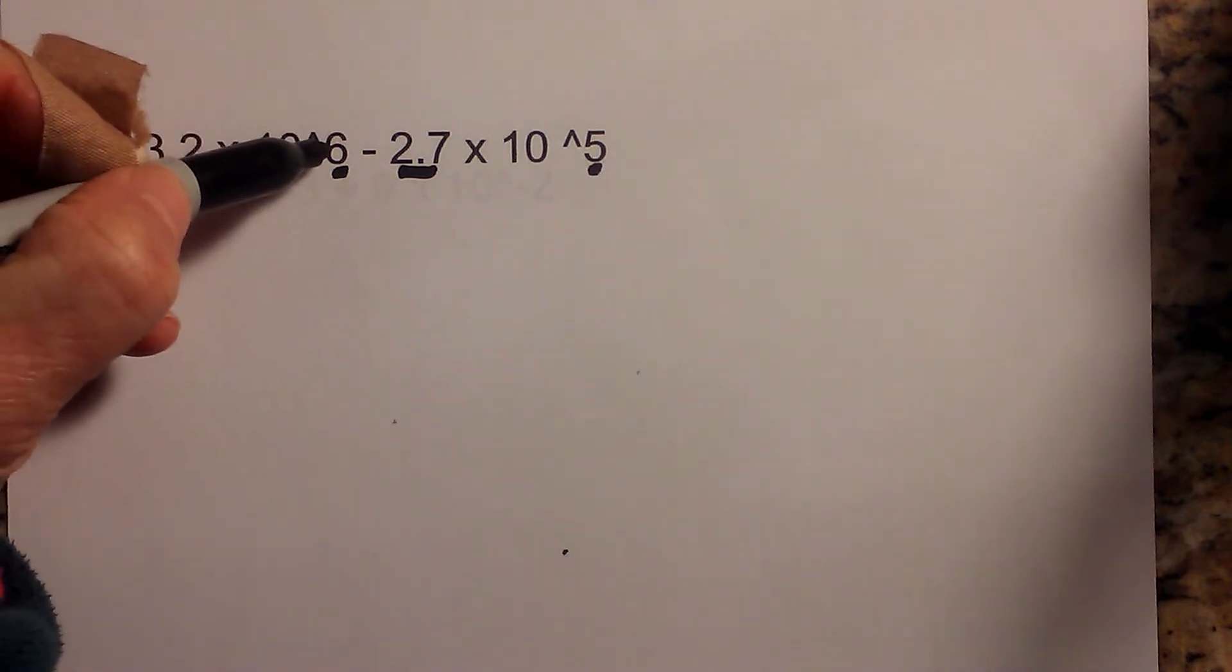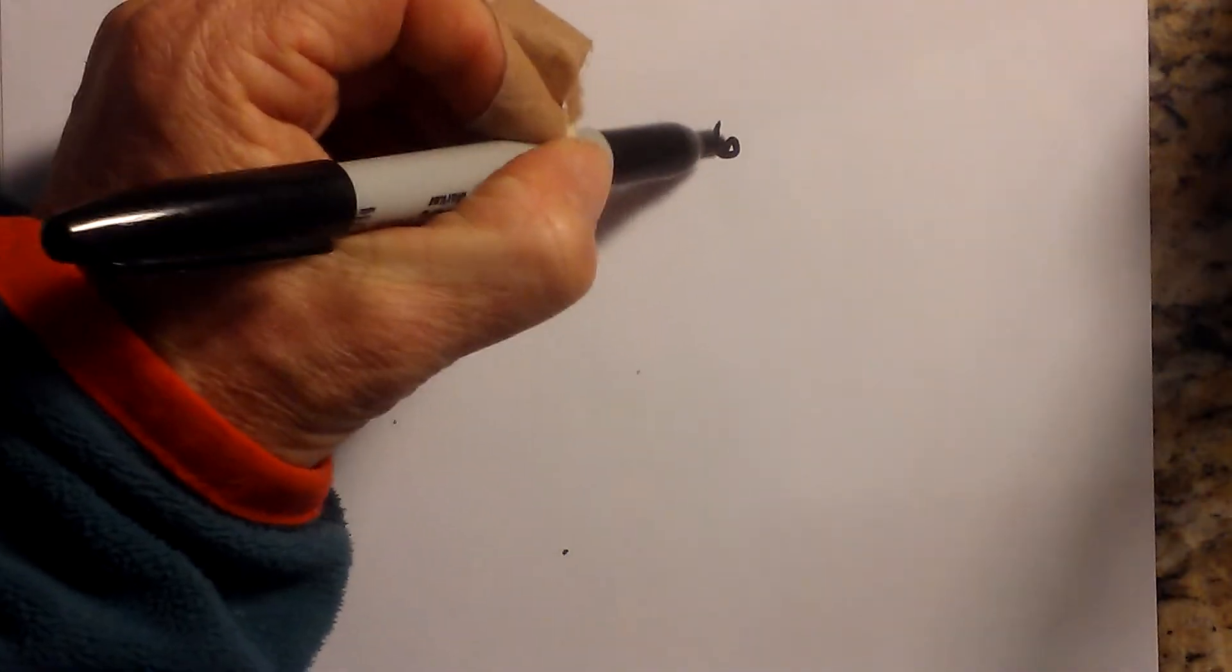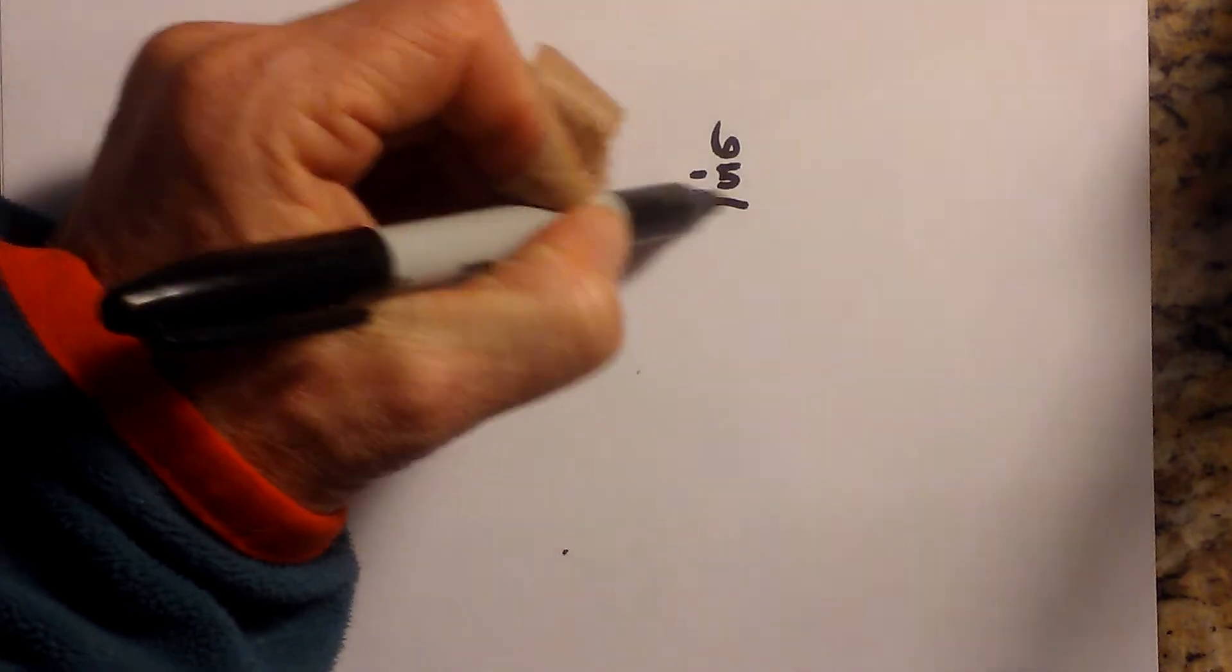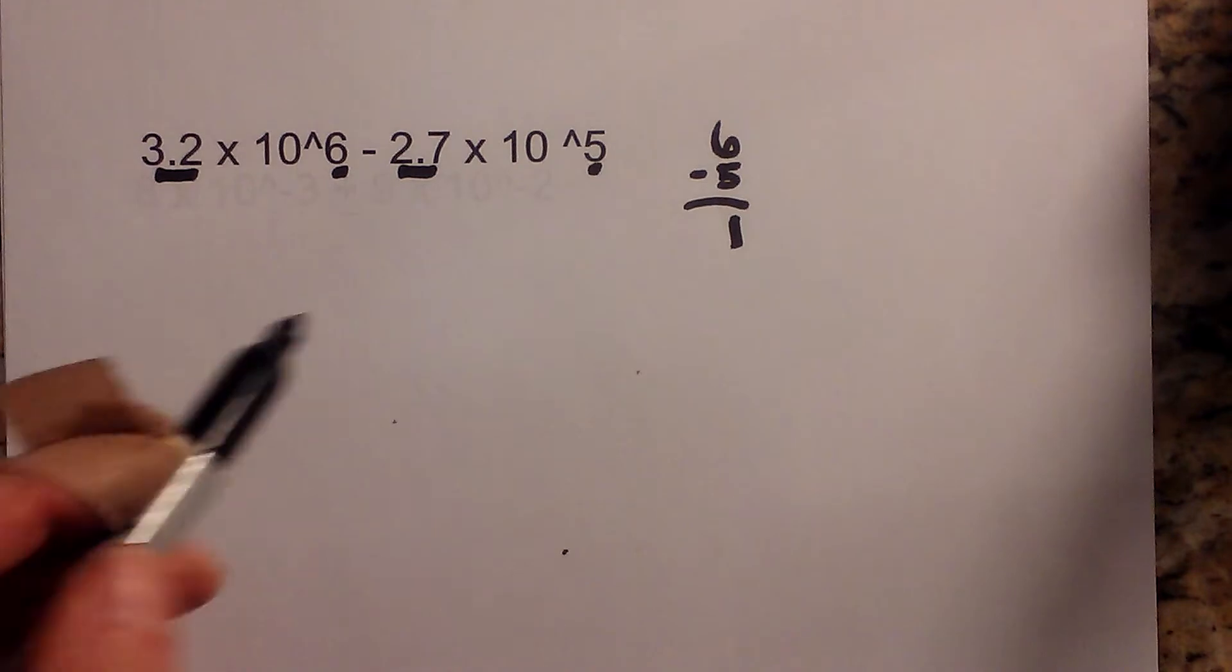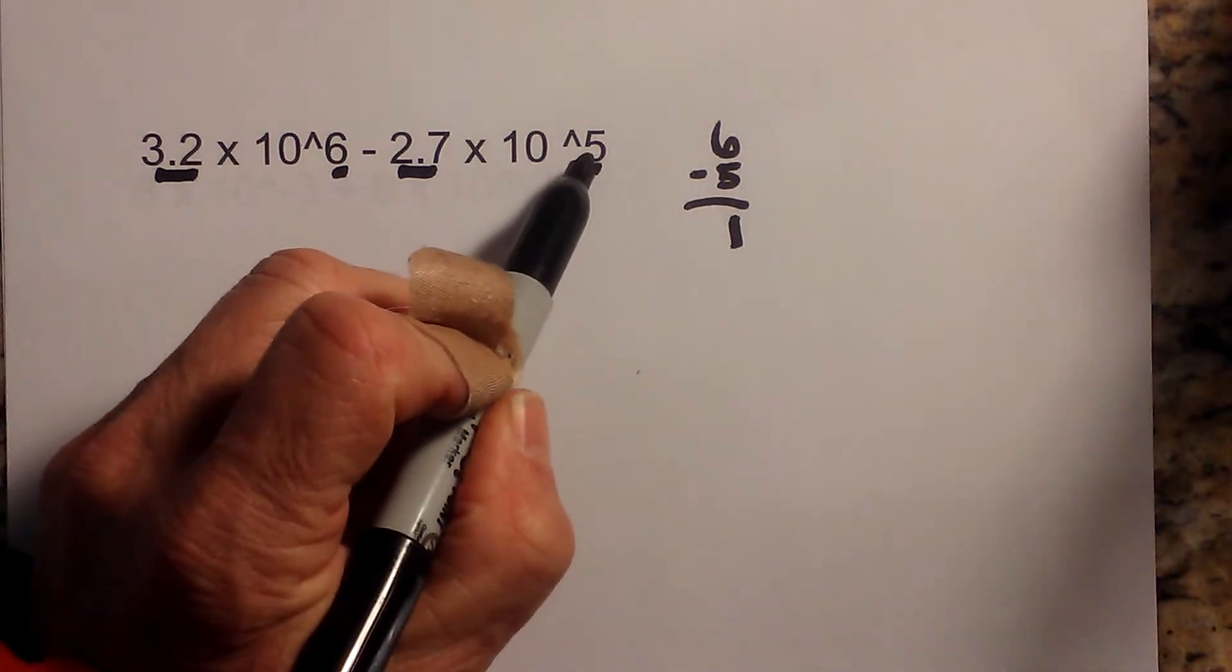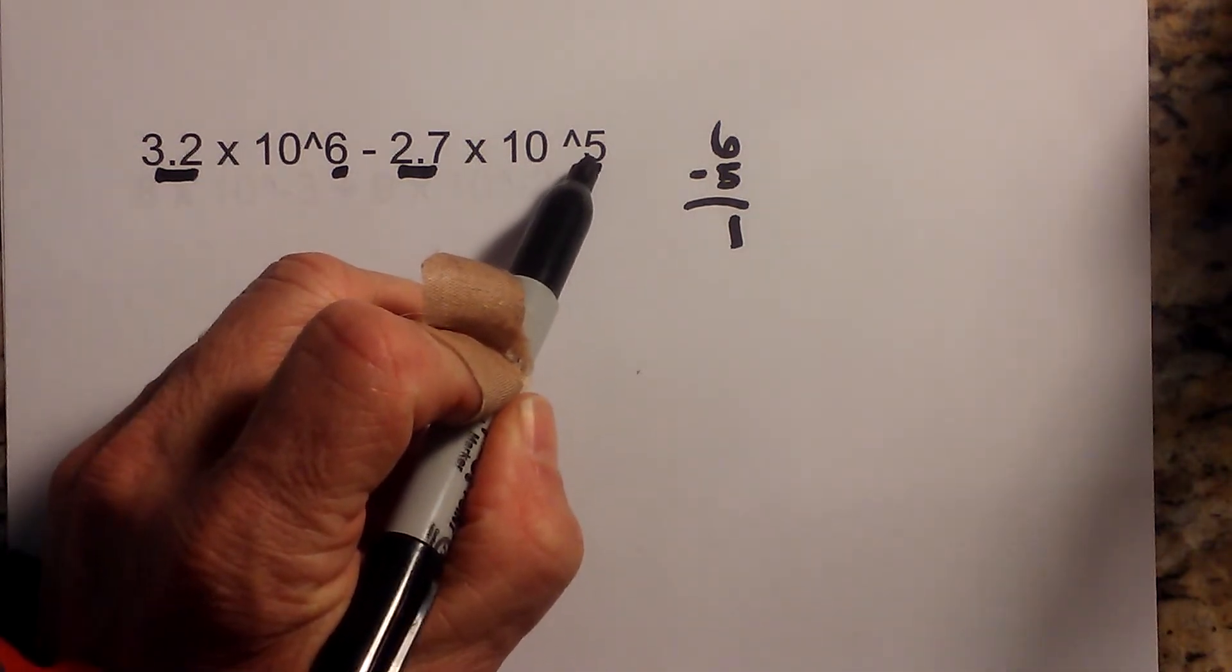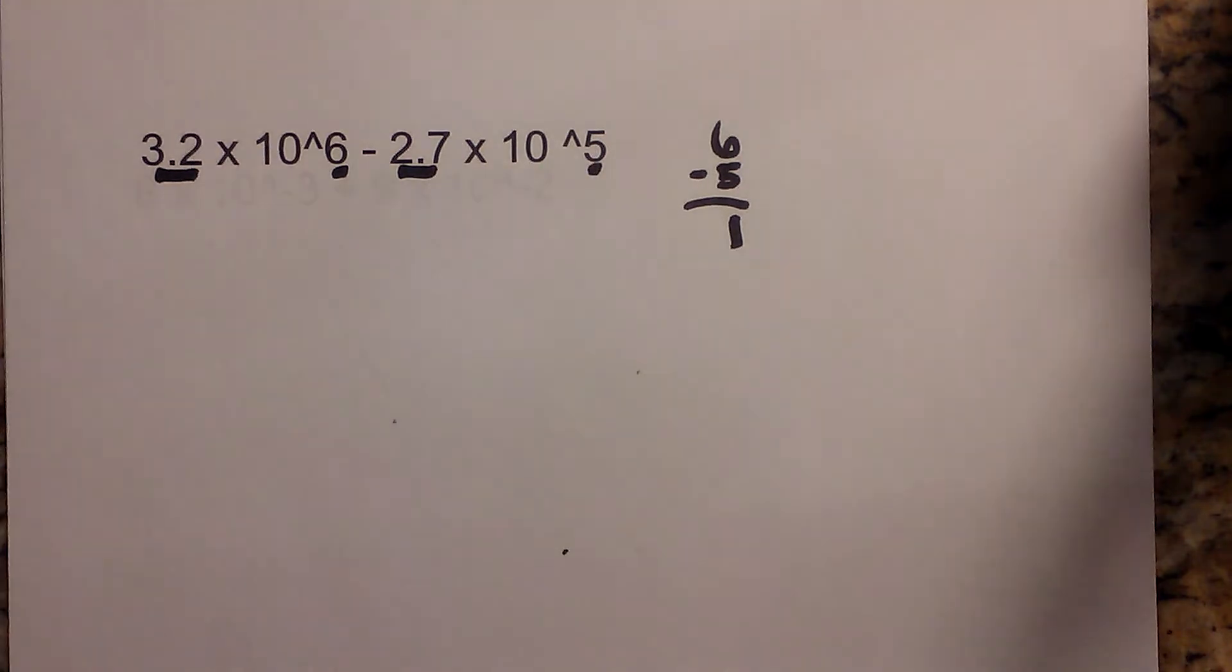So the first thing we can do is subtract 6 minus 5, the two exponents, and that gives you 1. So we know that we need to raise the power of the smaller exponent by 1, so the 5 needs to become a 6.